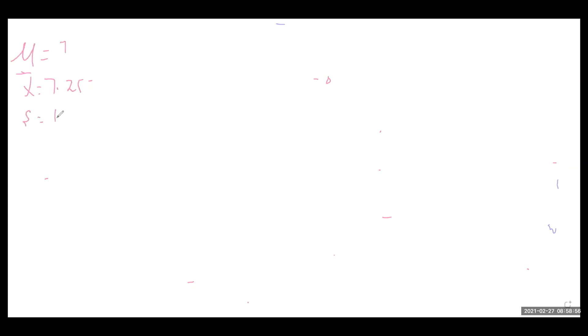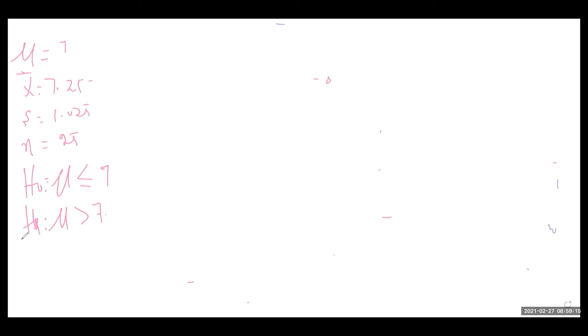So, the sample mean is 7, the sample standard deviation is 1.025, and the sample size is 25. We say H₀: population μ ≤ 7, and H₁: population μ > 7. We are using the t-test. The formula is: t = (x̄ − μ) / (s / √n), where n minus 1 is the degrees of freedom.